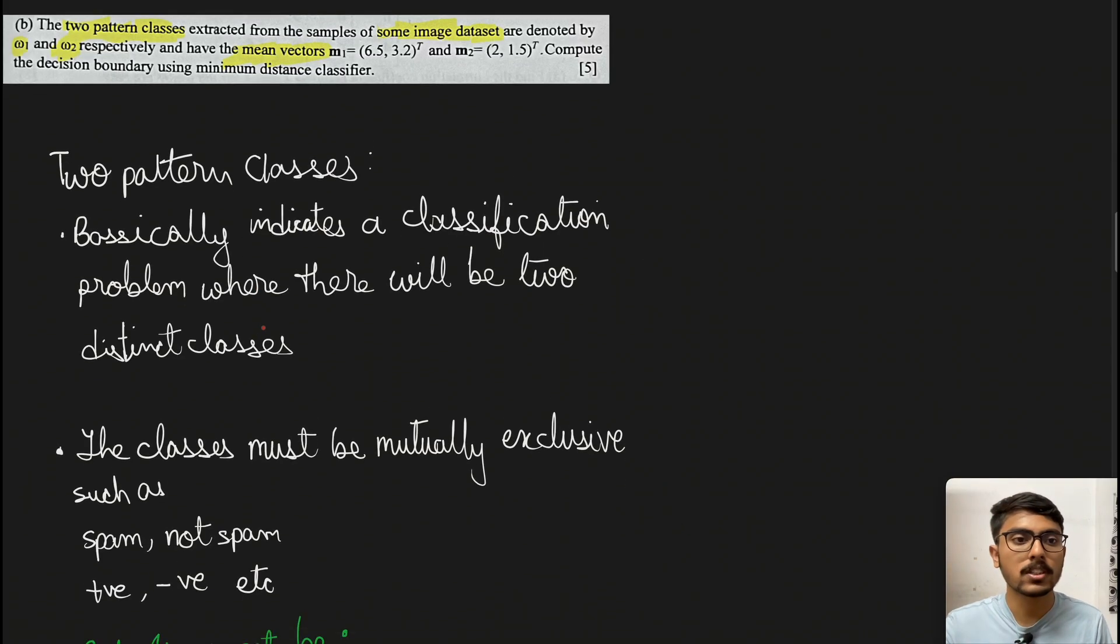Today we're discussing a problem on minimum distance classifier. This is a typical problem in computer vision and can be used in many other domains because it's a classification problem. In machine learning as well, you can expect these kinds of problems.